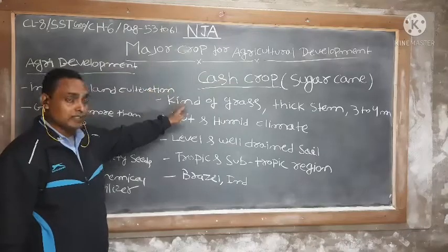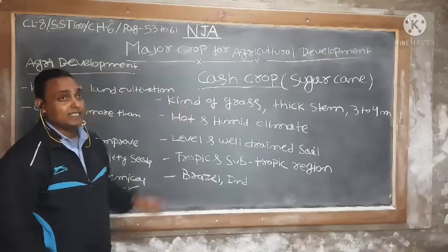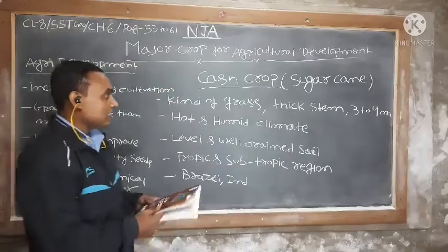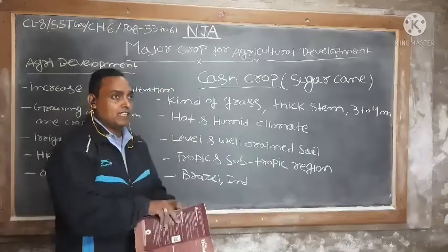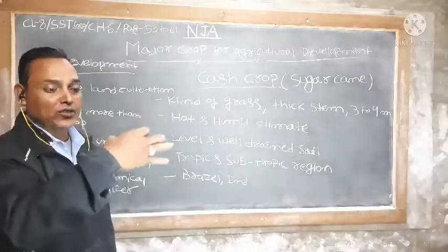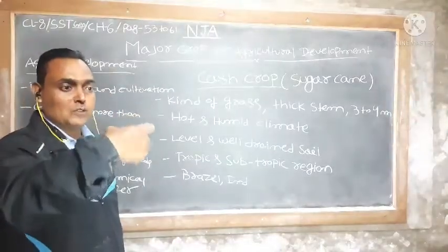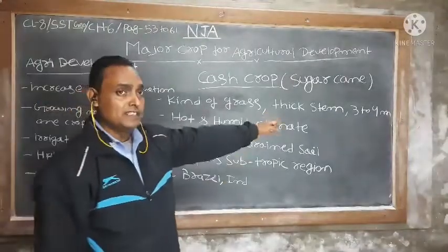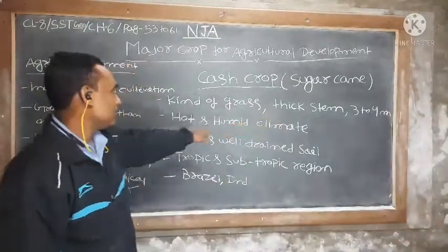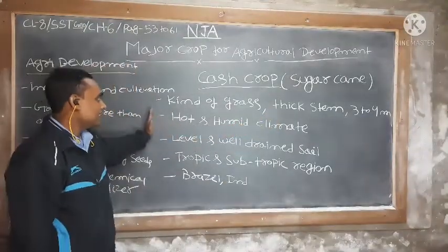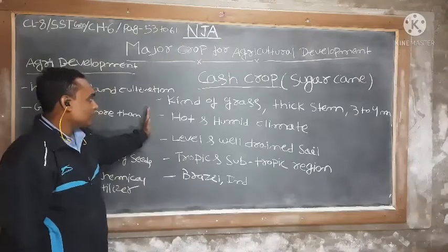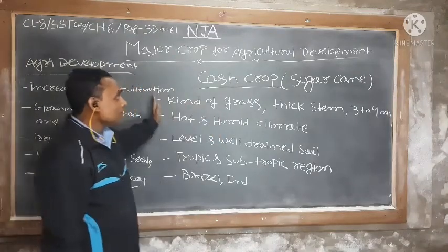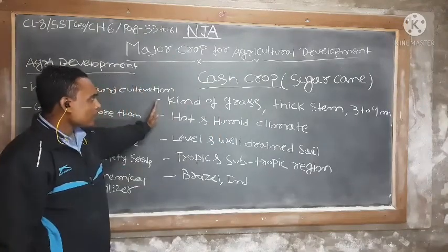Sugarcane is a kind of grass. It grows in hot and humid climate. It is grown in hot and humid climate, and it is used for sugar products.